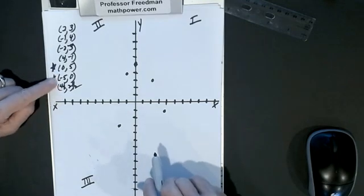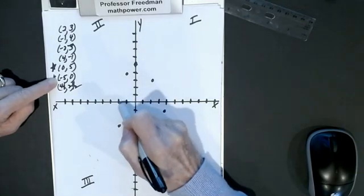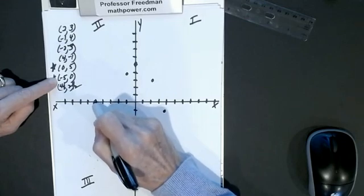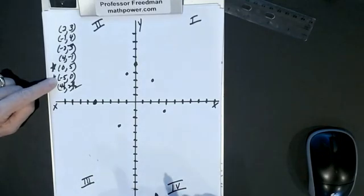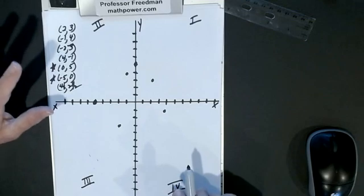This one, negative five, zero. x is negative five: one, two, three, four, five. Then I don't go up at all. That's my point, negative five, zero. So the only ones people mess up usually are the zeros. We'll talk about intercepts in a minute.